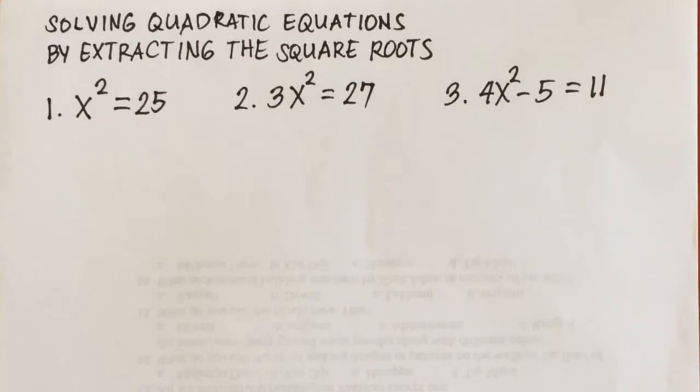Examples. Number 1, x squared equals 25. Number 2, 3x squared equals 27. And number 3 is 4x squared minus 5 equals 11.